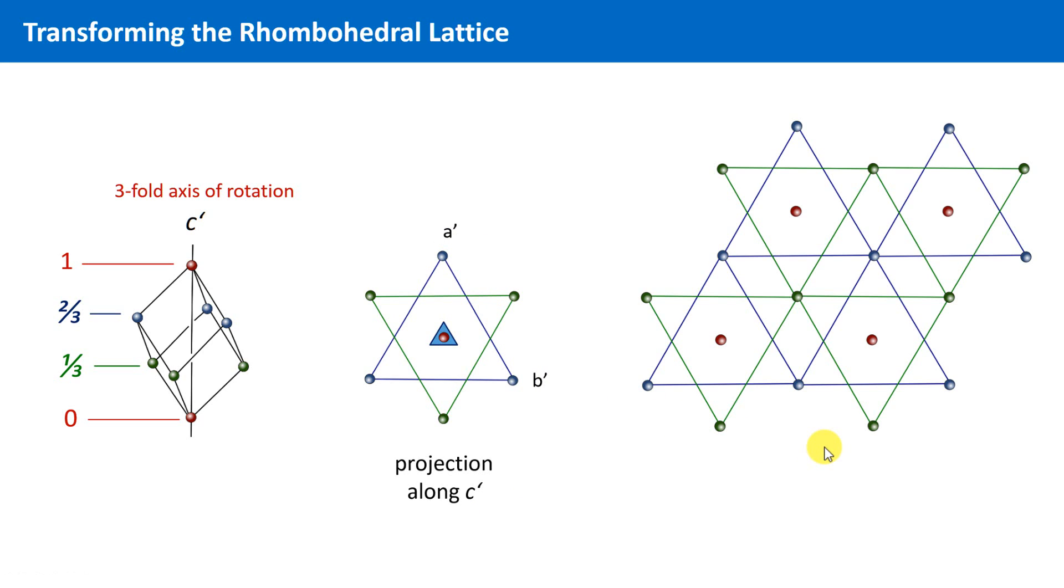And now, the question is, are we able to choose a larger unit cell, which has the metric of one of the other crystal systems? Think for a while. Look at the red lattice points.